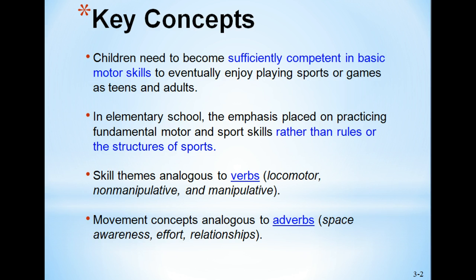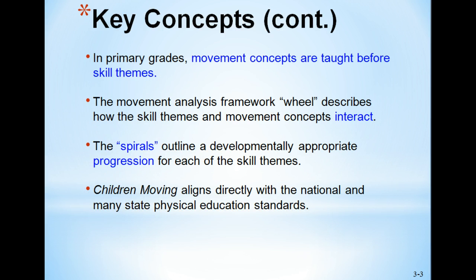All parts of those three movement concepts describe how an action is actually performed — at what level (high, medium, or low), and in what direction (forward, backward, sideways, and so on). In the primary grades — kindergarten through second grade — movement concepts are taught before skill themes. We want to get students to understand the cognitive concepts of space, effort, and relationships, and then concentrate on the skill themes to reinforce those movement concepts.